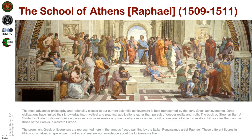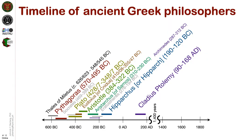The most advanced philosophy and rationality closest to our current scientific achievement is best represented by the early Greek achievements. The prominent Greek philosophers are most represented in this famous fresco painting by the Italian Renaissance artist Raphael. These different figures in philosophy helped shape over hundreds of years our knowledge about the universe we live in. To provide context of how these ideas are distributed over time, we show here a timeline of philosophers starting from Thales of Miletus, Pythagoras, Socrates, Plato, Aristotle, even to the time of Ptolemy.